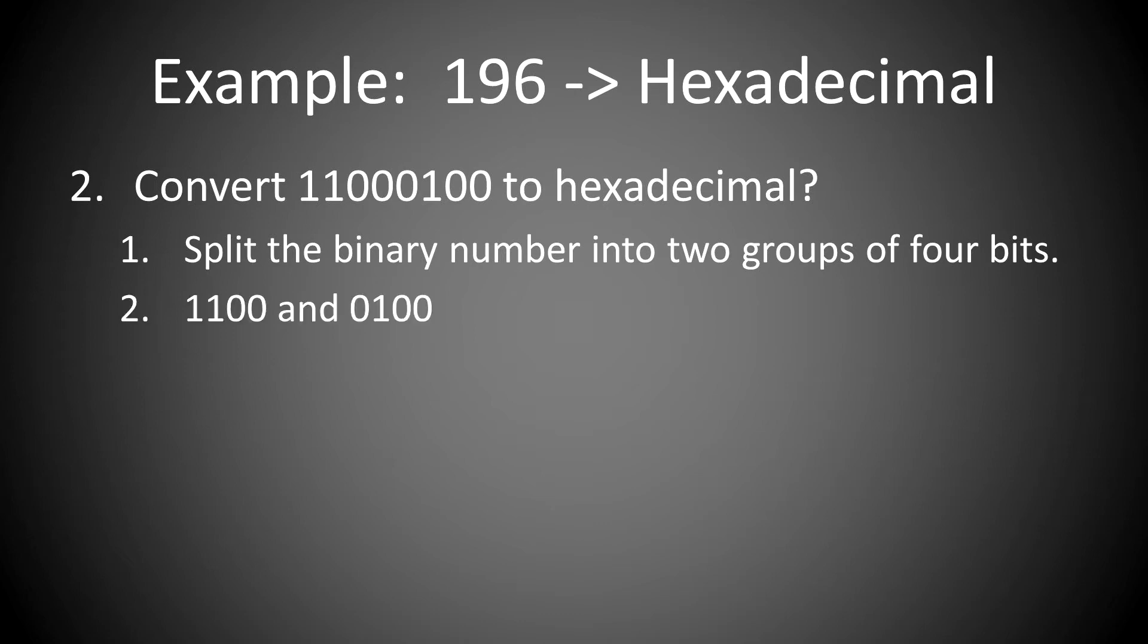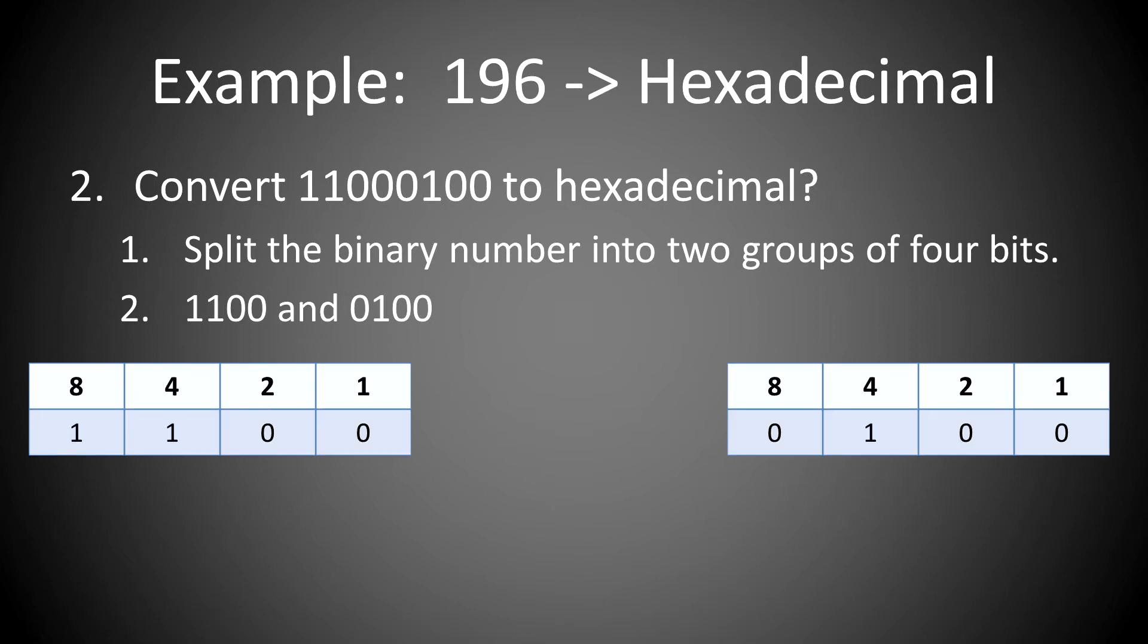The first group is 1100 and the second group is 0100. Take these and put them into mini binary conversion charts, which leaves 8, 4, 2, and 1 at the top. Put the binary number into each chart. For each bit, multiply the 1 or 0 times the number above it in the chart, and add up the results.